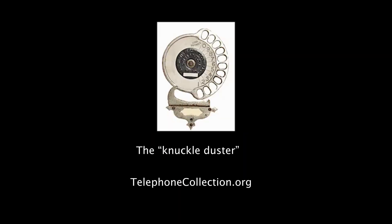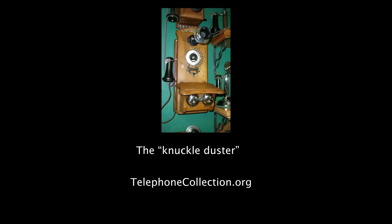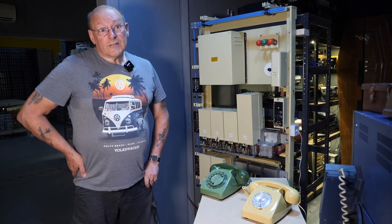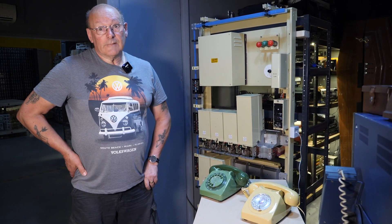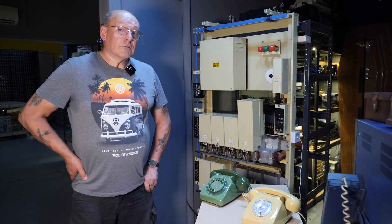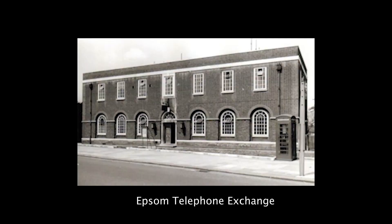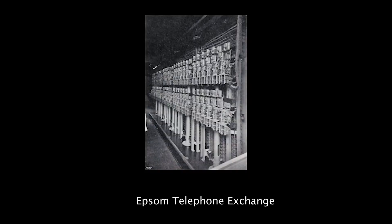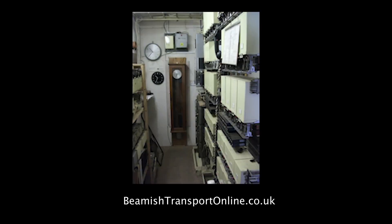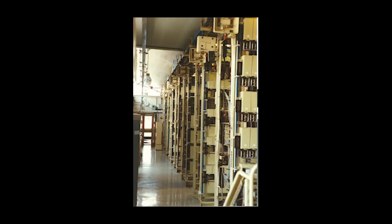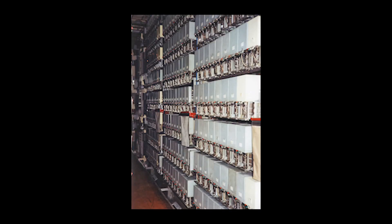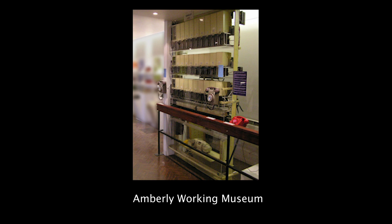Gradually this system became the standard automatic telephone system. In the early 1900s, when the British Post Office were beginning to consider converting our exchanges to automatic, it was the Strelger system that they went for. 1912 saw the first automatic exchange and the first telephones with dials, and this system was used by the Post Office up till the late 70s.